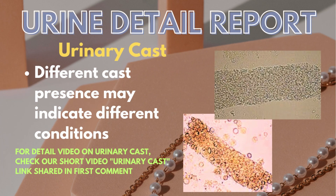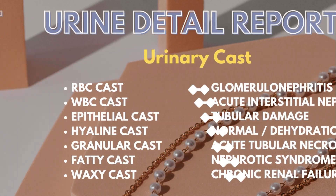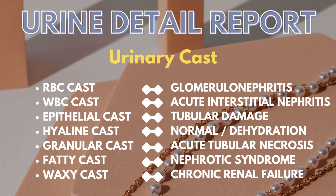Different cast presence may indicate different conditions. For example, RBC cast may be seen in glomerulonephritis. WBC cast may be seen in acute interstitial nephritis. Epithelial cast may be seen in conditions causing tubular damage. Hyaline cast may be seen in normal urine or in conditions like dehydration, strenuous exercise, or vomiting. Muddy brown granular cast may be found in acute tubular necrosis. Fatty cast may be found in nephrotic syndrome. Waxy cast may be found in chronic kidney disease.